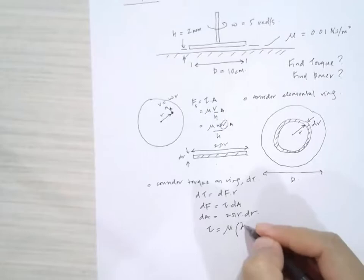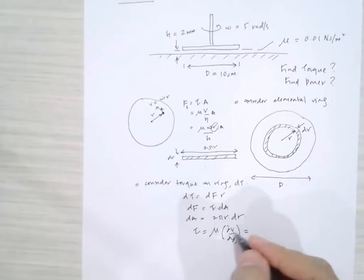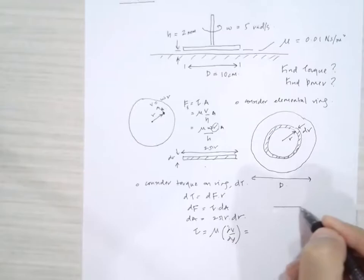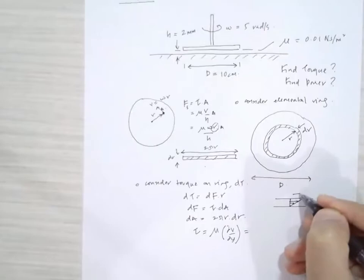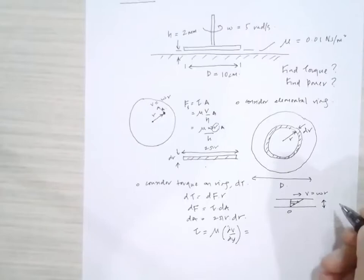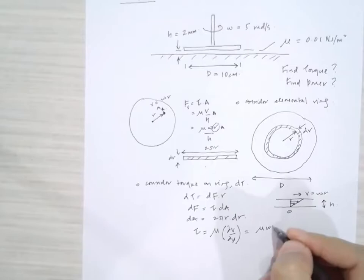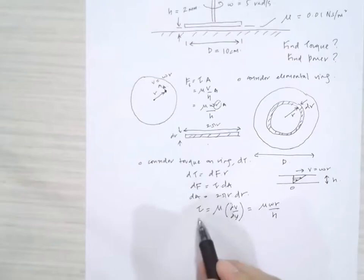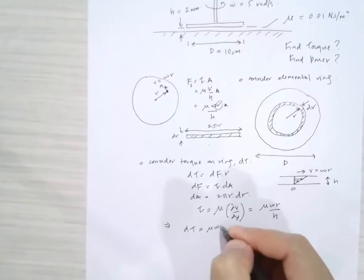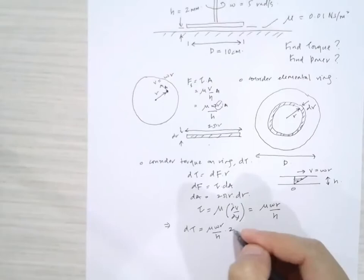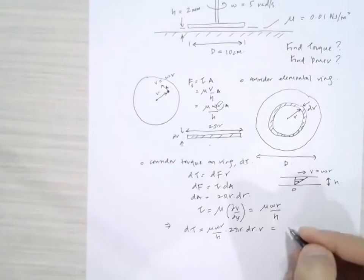We also know that tau equals mu times dv/dy. Consider the bottom surface as stationary and the disk rotating on top: the velocity at the disk surface is v equal to omega r, while the bottom is zero, and the gap thickness is h. Therefore tau equals mu times omega r divided by h. Substituting dA and tau into the torque expression gives dT equal to mu omega r over h multiplied by 2 pi r dr multiplied by r.